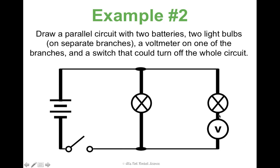I need a switch somewhere that can turn the whole circuit off. Anytime you see a switch that should turn the whole circuit off, just put it near the battery, because all current has to go in and out of the battery. If it had said to turn off the lights individually, you would want to put the switches right next to the lights on their individual branches. Keep that in mind.